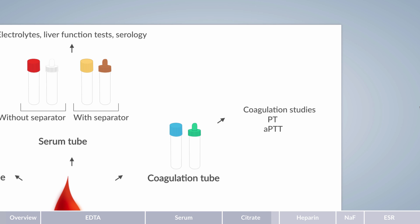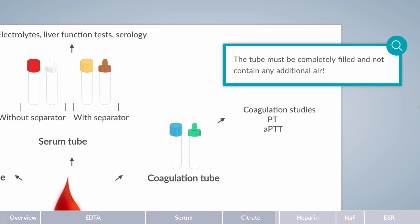But, take care. To avoid false measurements, correct ratios are required. The collection tube must be completely filled with blood and not contain any additional air from the collection system.